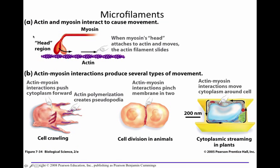Actin and myosin play a role in muscle contraction, causing movement — actin is a microfilament. They also ensure cells can crawl using pseudopodia, are involved in cell division, and in plants, actin and myosin interact to move cytoplasm around. These are all examples of how microfilaments are involved in cell motility.